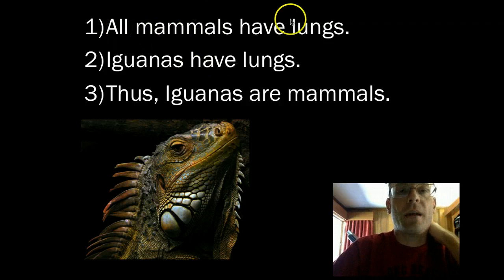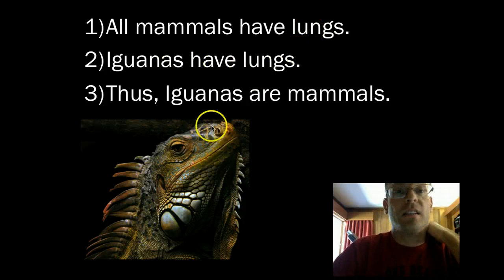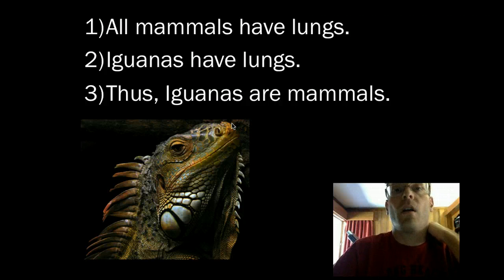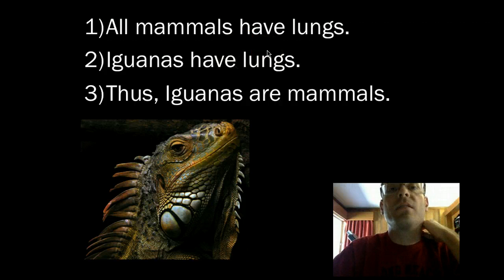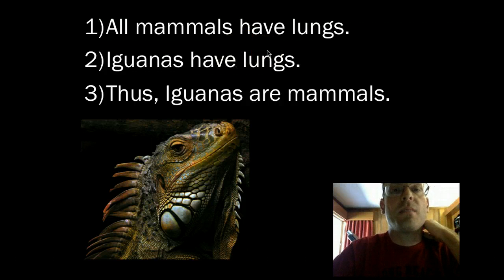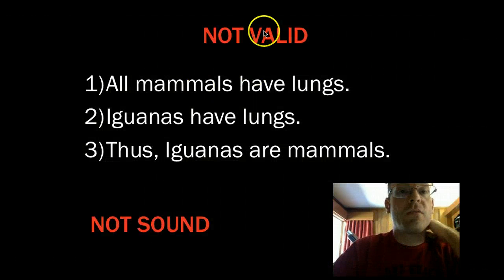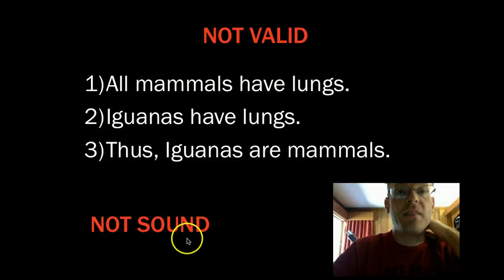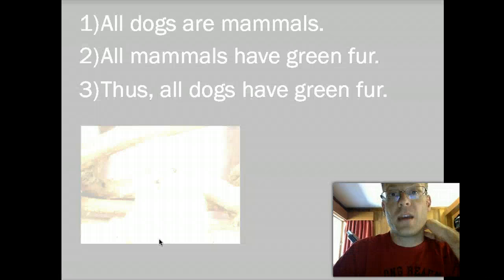Think about it. All mammals have lungs — suppose that's true. Suppose also that iguanas have lungs. Does it follow that iguanas are mammals? No, it doesn't, because what we would need to establish is that iguanas are not some other type of thing that doesn't have lungs. So the argument would not be valid, and of course it is not sound because iguanas are not mammals.